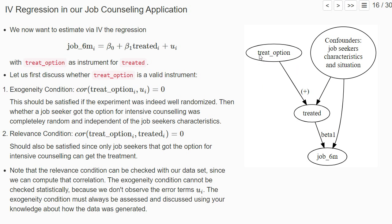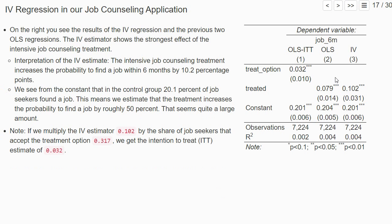Since it's randomized, it's uncorrelated with u_i, so it satisfies the exogeneity condition. It's also relevant because only subjects who had the option to be treated could be treated.